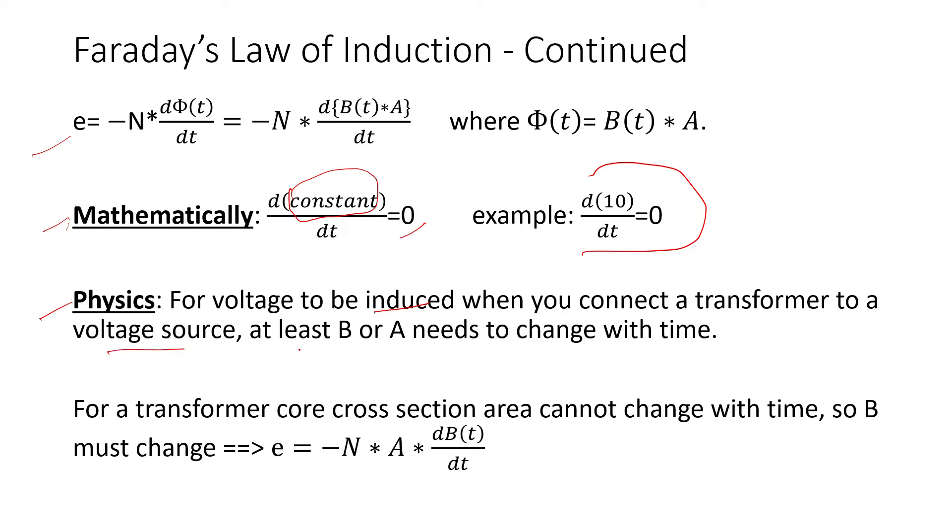In terms of physics, for voltage to be induced when you connect the transformer to a voltage source, at least the flux density B or cross-section area A needs to change with time. One of them has to be changing with time, otherwise this will be zero if nothing is changing.